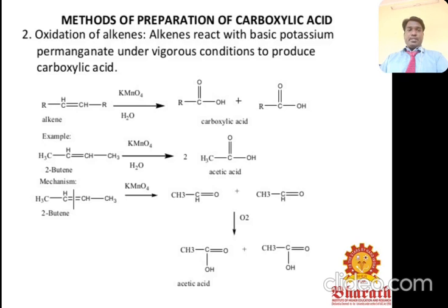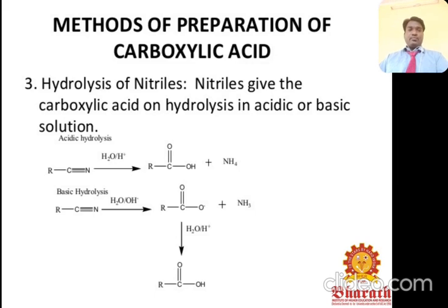The second method is oxidation of alkenes. Alkenes react with basic potassium permanganate (KMnO₄) under vigorous conditions in the presence of water to produce carboxylic acid. For example, 2-butene reacted with potassium permanganate gives two moles of acetic acid.